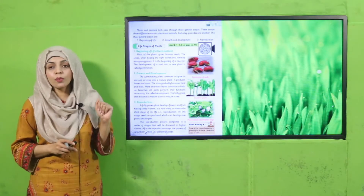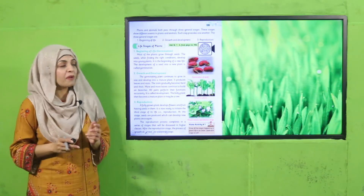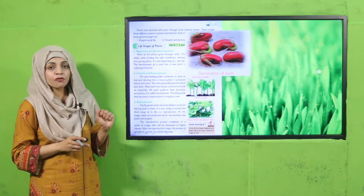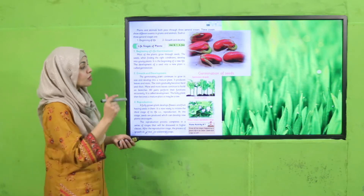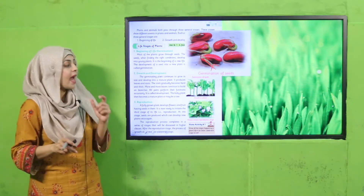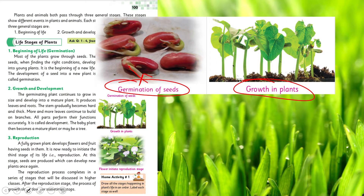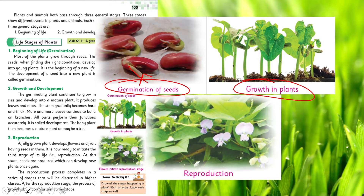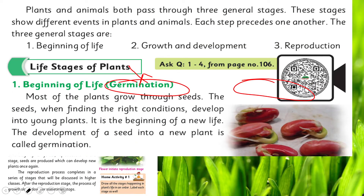My dear students, now please quickly open page number 100 in your GK3 book. Just as I soaked the bean seed overnight in water, when you put the seed into the ground under the right conditions that is called germination of seeds. Then tiny plants grow from it — this is called growth in the plant. After that, flowers come out on it — and this is called reproduction.